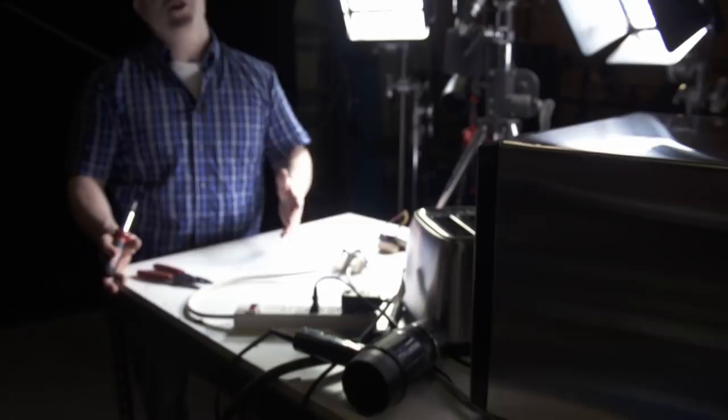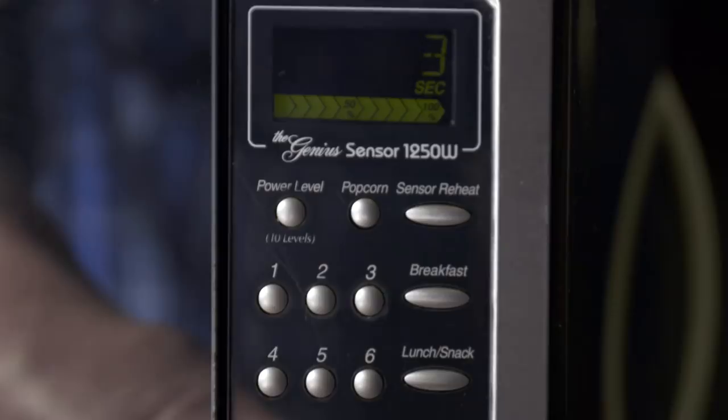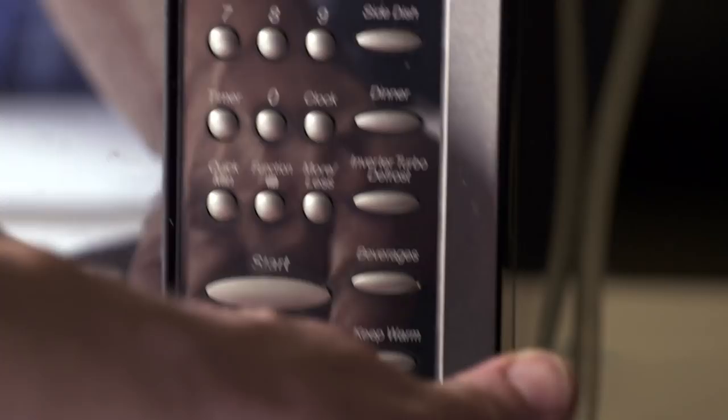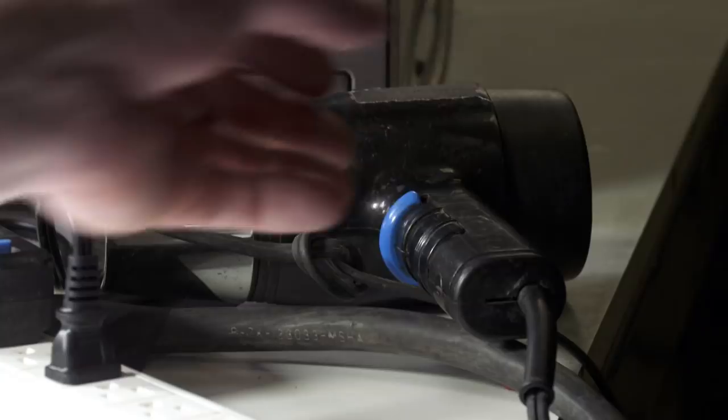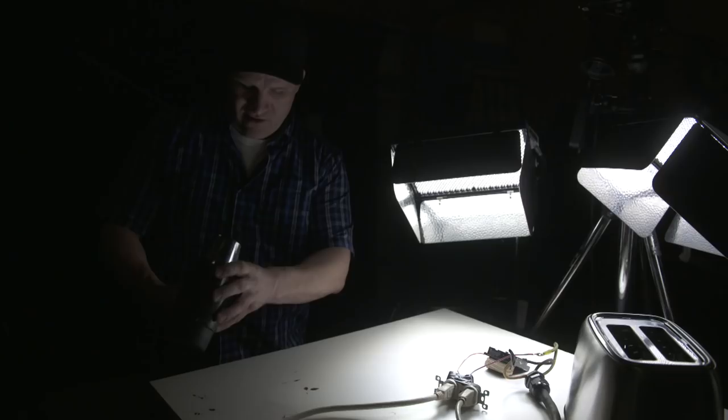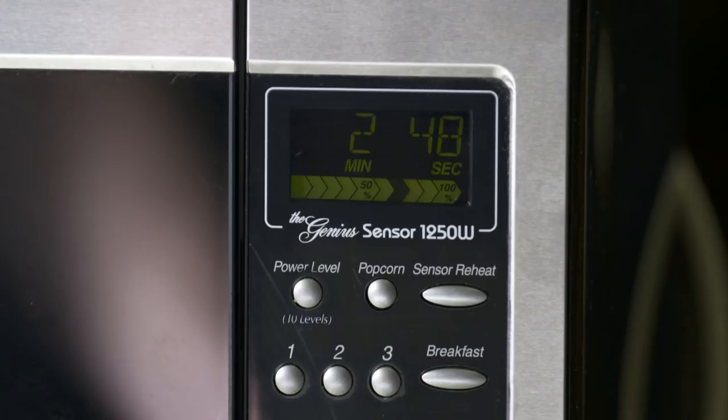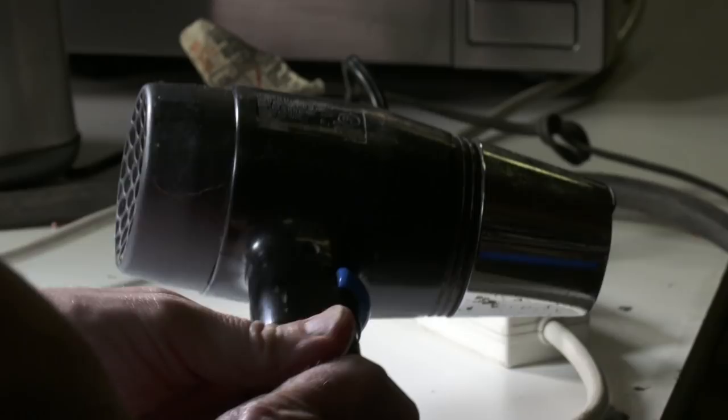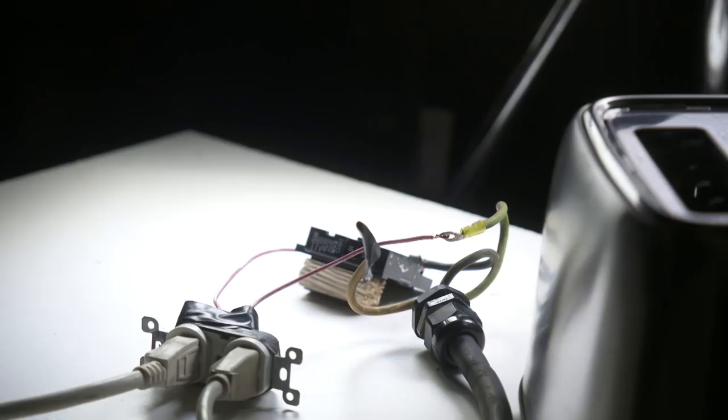All right, I got my circuit breaker all set, ready to replicate a slow blow scenario. Microwave, toaster oven, and last but not least, hair dryer. I'm going to overload the circuit breaker to show exactly what happens inside the circuit breaker when it trips.